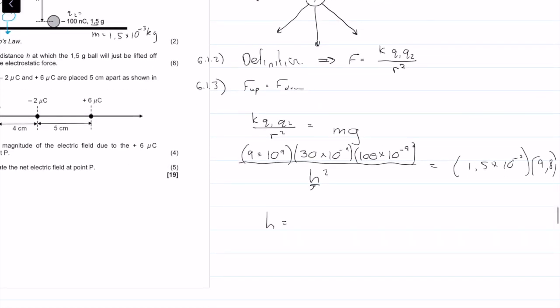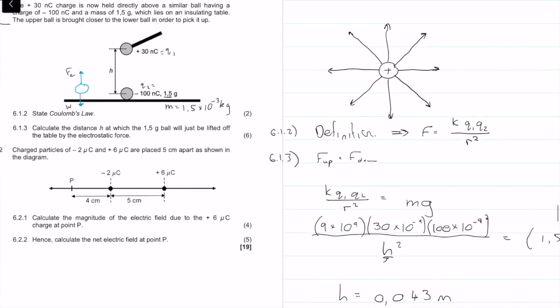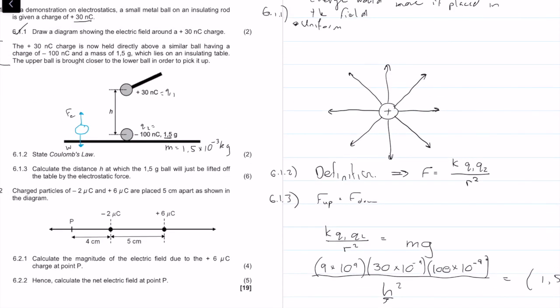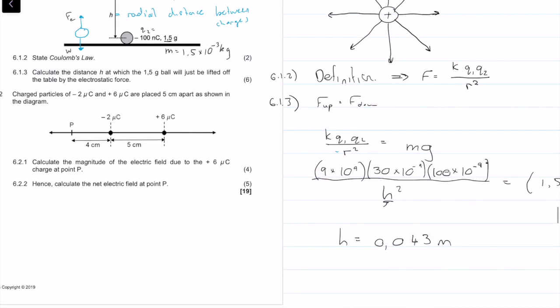The only unknown here is our height. So H is equal to 0.043 meters. The reason why I replaced H and R is because H is defined as our radial distance between the charges. Therefore I could replace this R squared with this H squared.